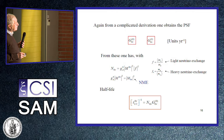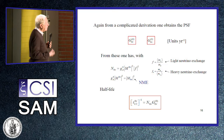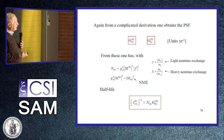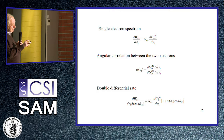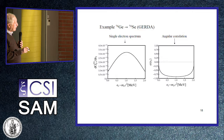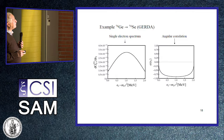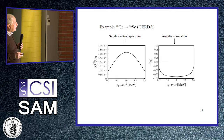Light and heavy neutrino exchange have opposite behavior. One can then calculate the single electron spectrum, the angular correlations, and the double differential rate. An example important for the GERDA experiment at Gran Sasso uses the decay of Germanium-76. Here is the single electron spectrum and the angular correlations for the emission of two electrons in the absence of neutrinos — quantities needed to analyze the experiment if this process is eventually observed.